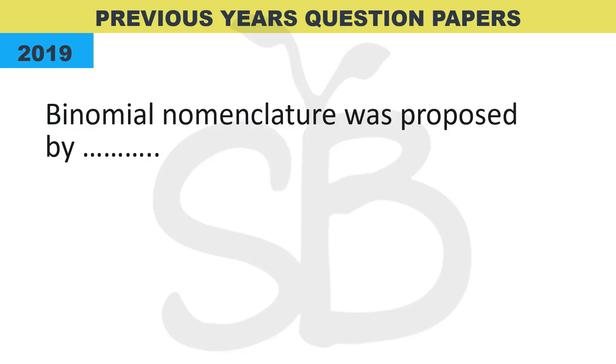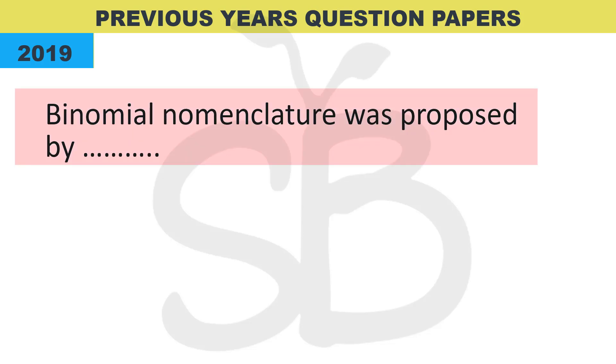Next question from the 2019 annual exam: 'Binomial nomenclature was proposed by ___.' Binomial nomenclature means two names — the genus name and the species name — giving each organism a unique scientific name.